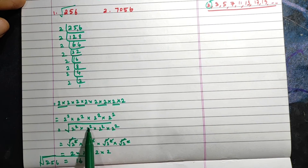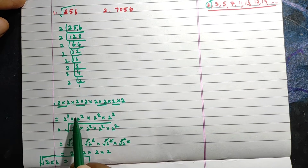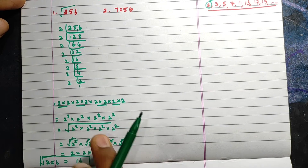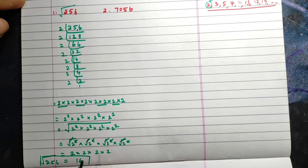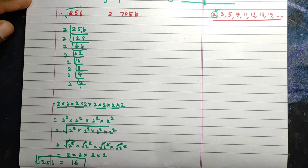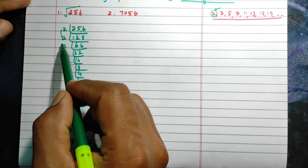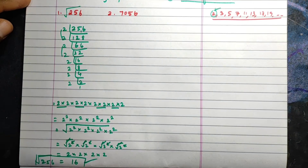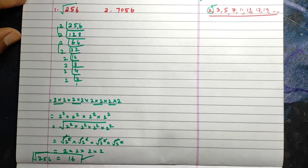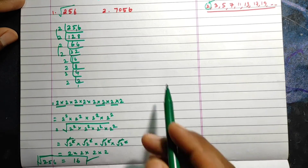This is the prime factorization method. Making a pair and canceling the square and square root is the full procedure. But directly, if you want, you can take one number from each pair and multiply — that way you get the answer directly.